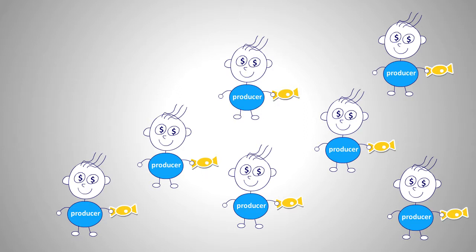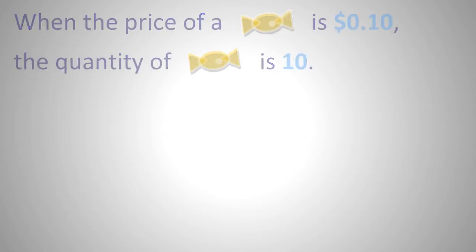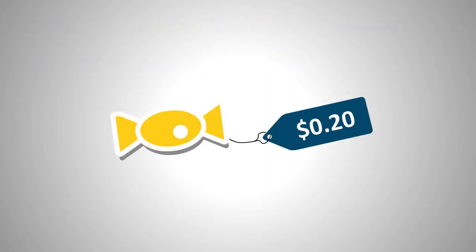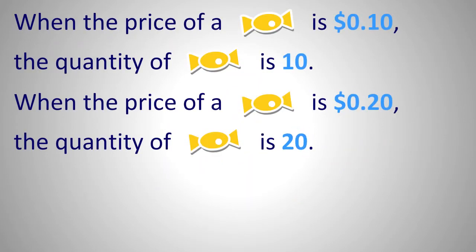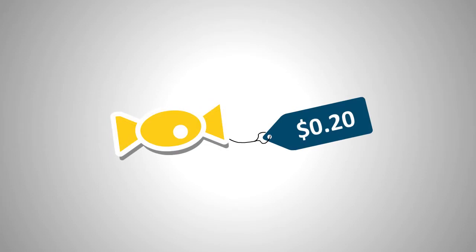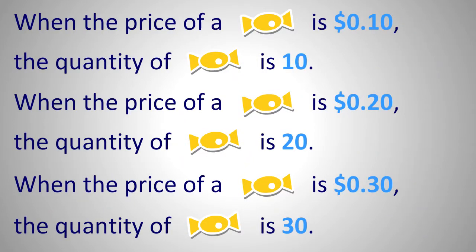Let's pretend that all of us are sweet suppliers. The price of a sweet is 10 cents — how many of you want to supply sweets? Not a lot of interest here, so let's say 10 sweets are supplied. Suppose the price increases to 20 cents — more interest! Makes sense: when the price gets higher, you'll make more money. So let's say 20 sweets are supplied. At 30 cents, more people want to produce sweets — 30 sweets produced, and so on.